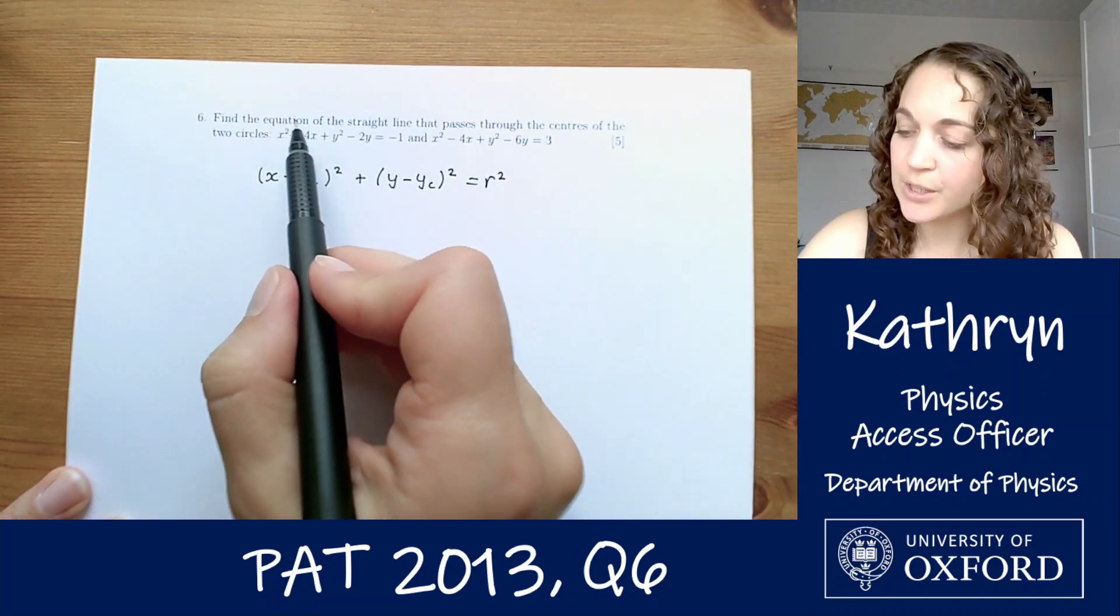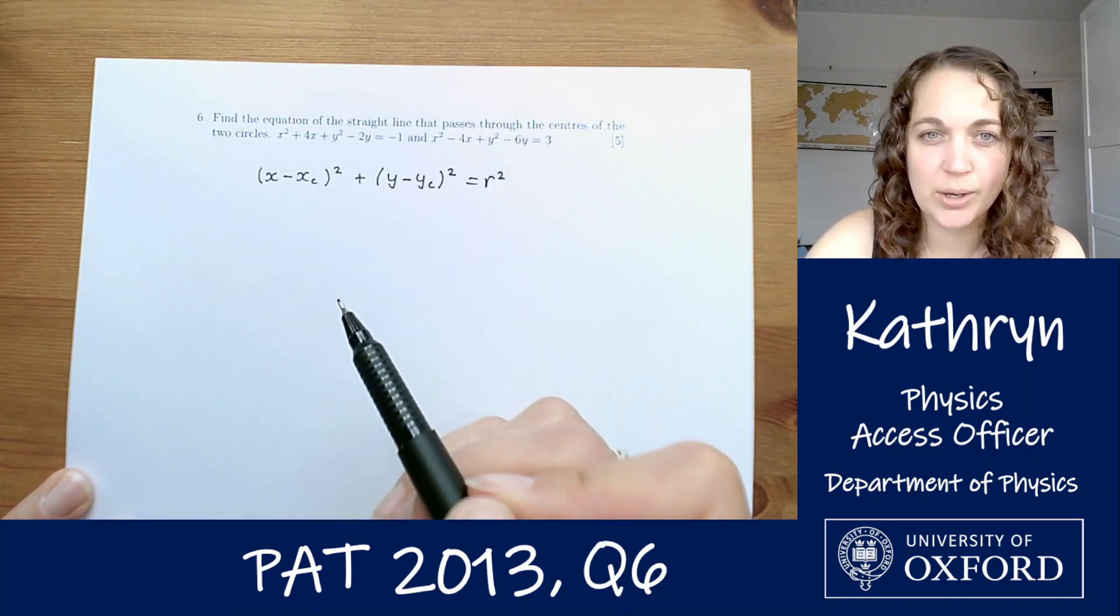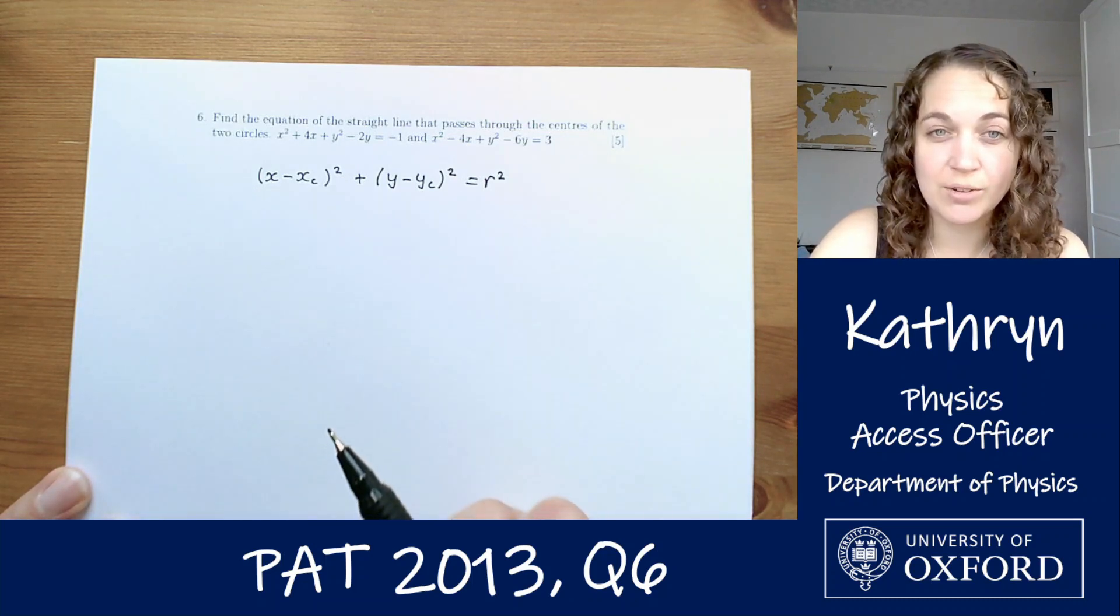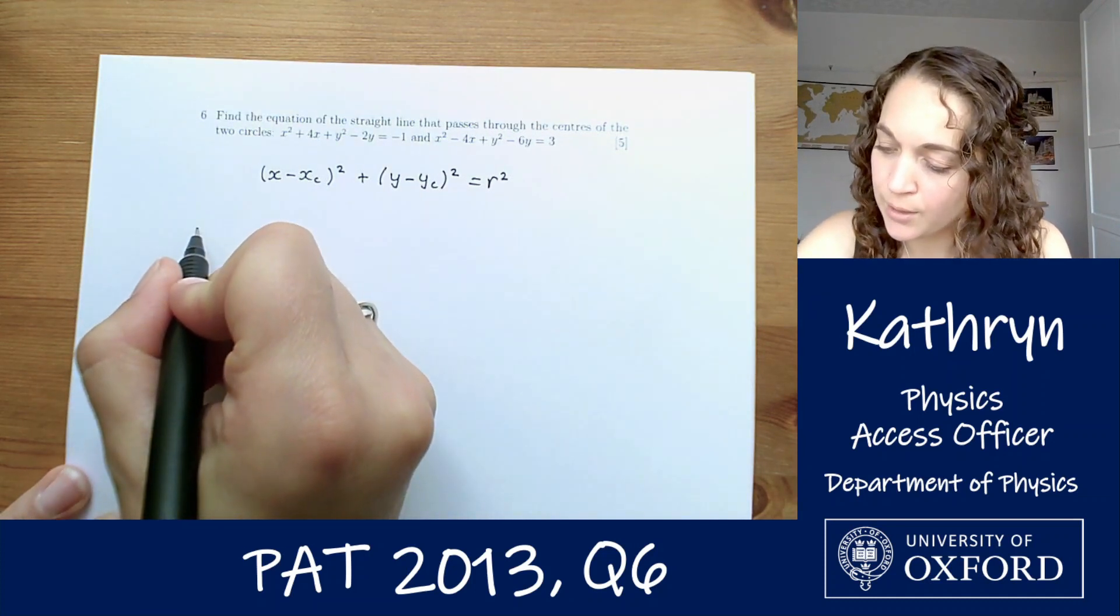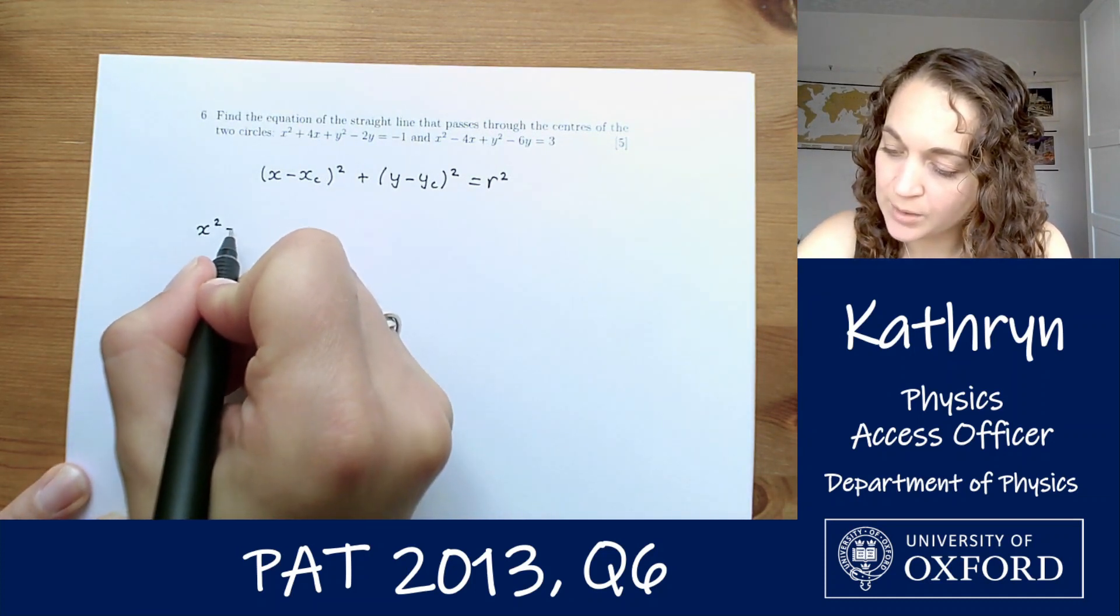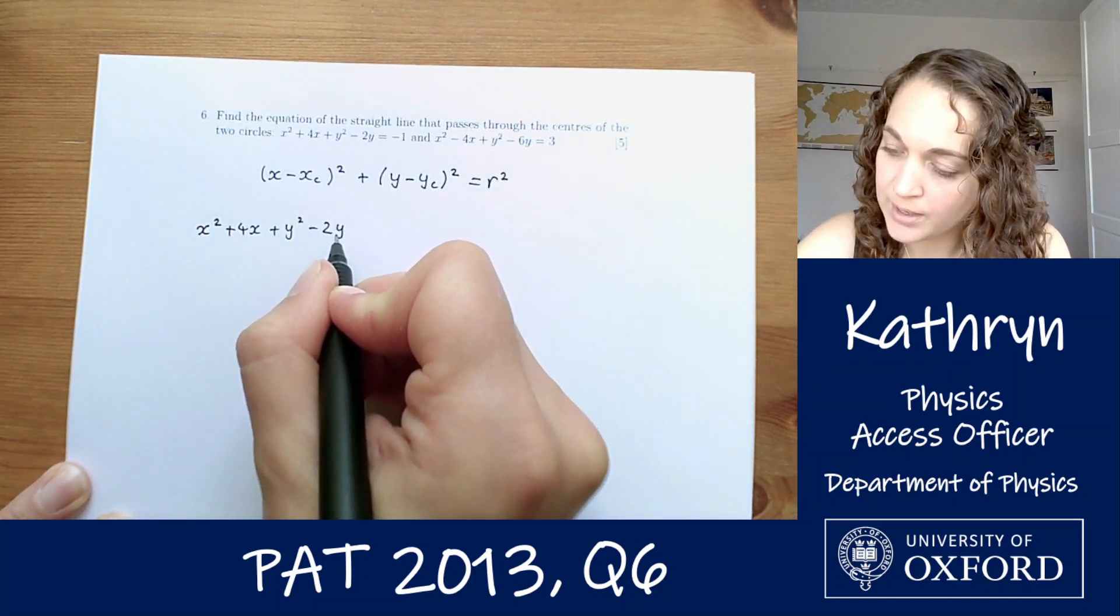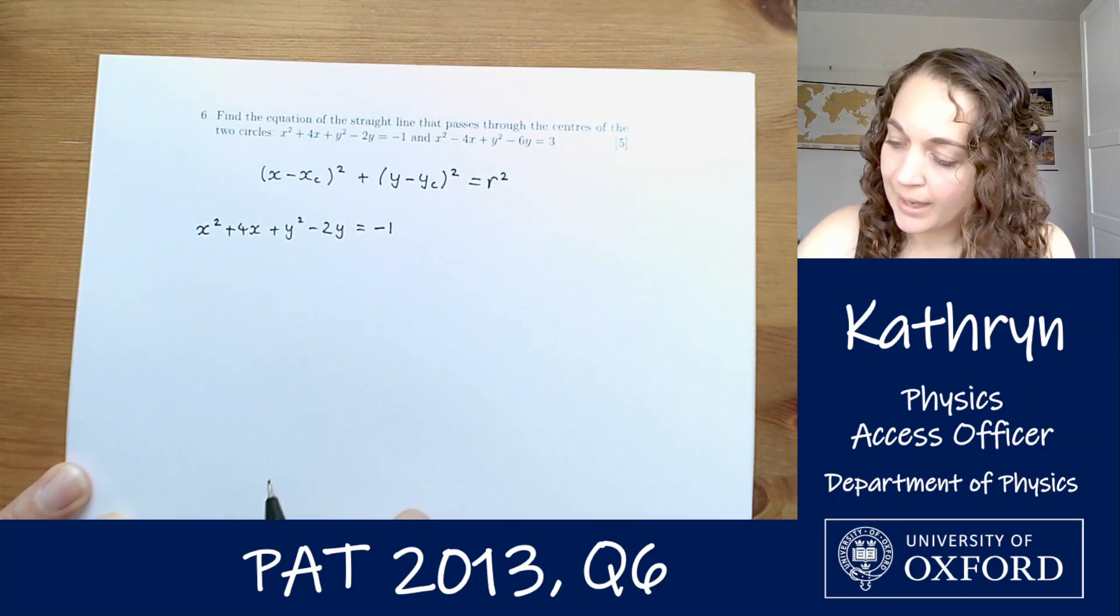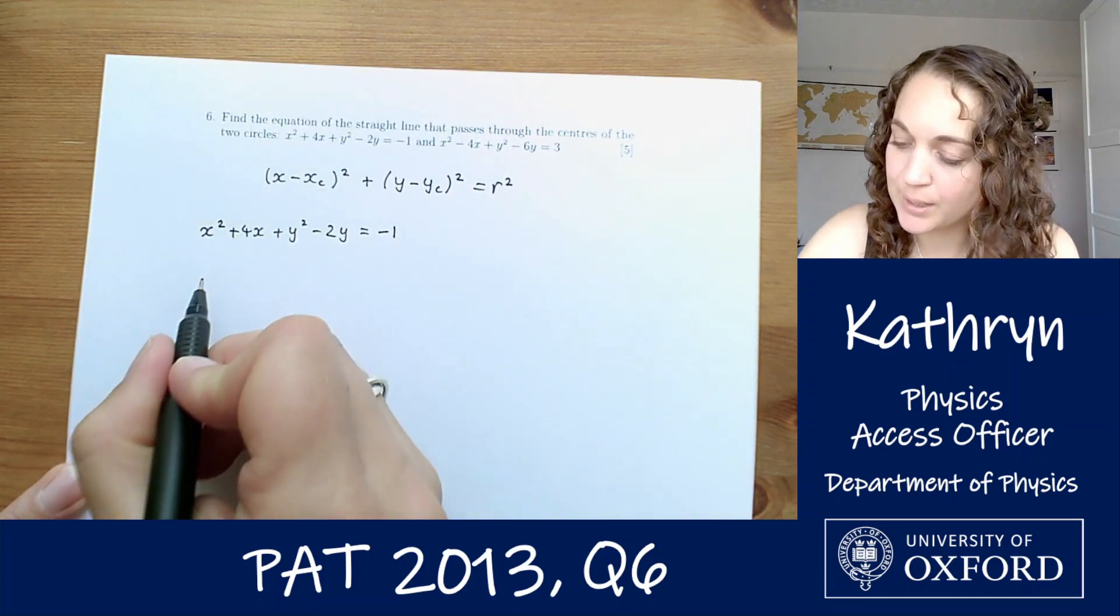Now we've got these equations for two circles but they're not in this standard format so we can't see straight away what the centres are. So our first job is going to be to transform them into this form. We're going to start with the first one x squared plus 4x plus y squared minus 2y equals minus 1. And the way to get it into this format is going to be to complete the square.